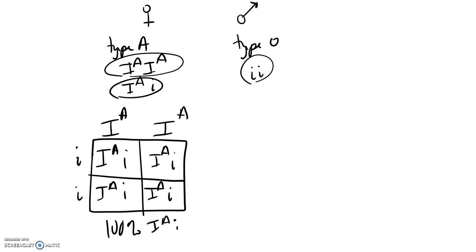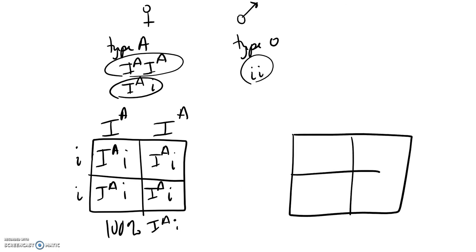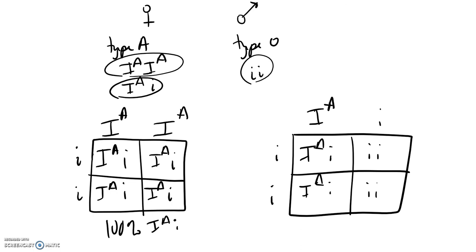For the second Punnett square, we use the other possible genotype for her — I^A i. If this is in fact her genotype, then they have a 50-50 percent chance: 50% of their children would likely be type A, and 50% would be type O.